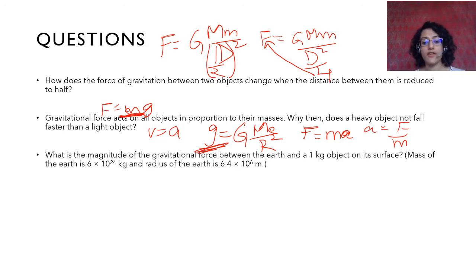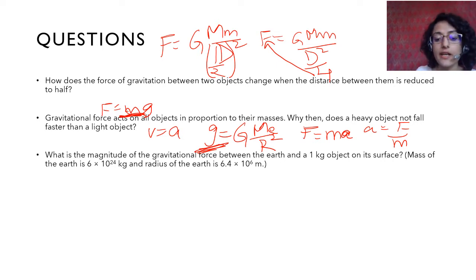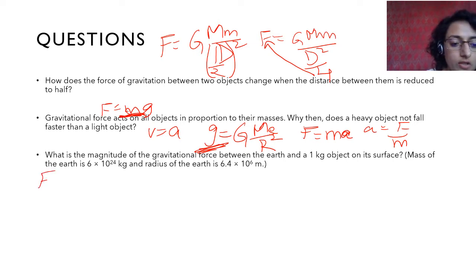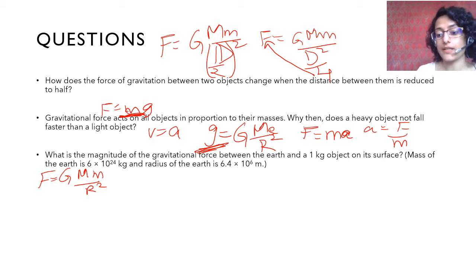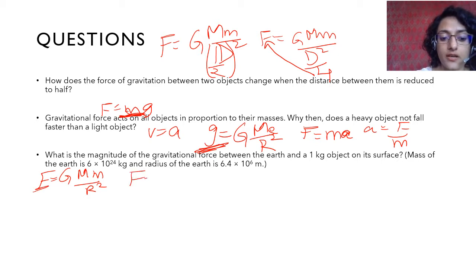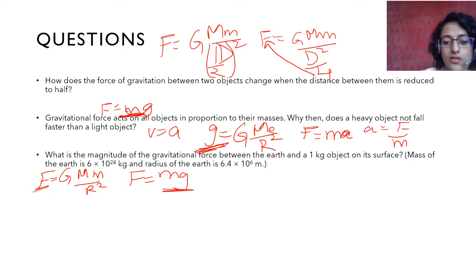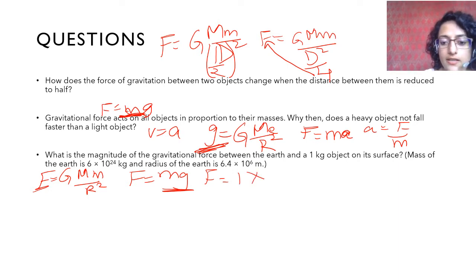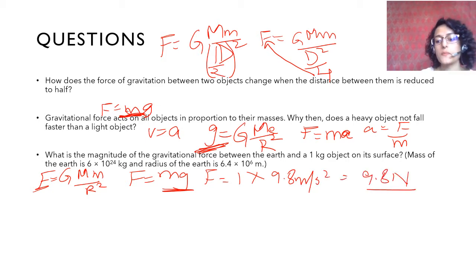What is the magnitude of gravitational force between the earth and a 1 kg object on the surface? There are two ways to solve this. Using F = Mg: mass is 1 kg, g is 9.8 m/s². So force is 9.8 Newtons. You can also use F = GMm/R², and both methods give the same answer.